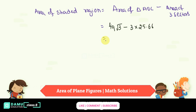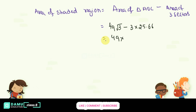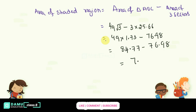Using √3 = 1.732, we get 49 × 1.73 = 84.77. And 3 × 25.66 = 76.98. Therefore, shaded area = 84.77 − 76.98 = 7.79, approximately 7.8 cm².